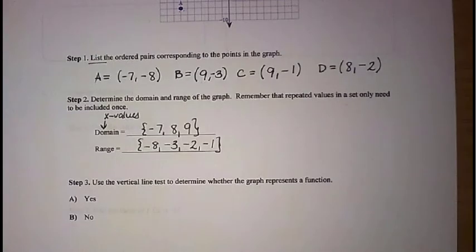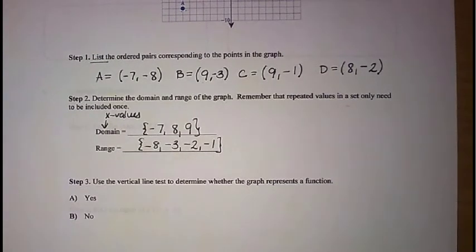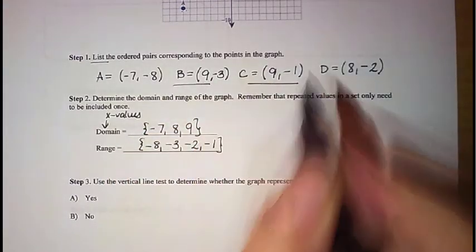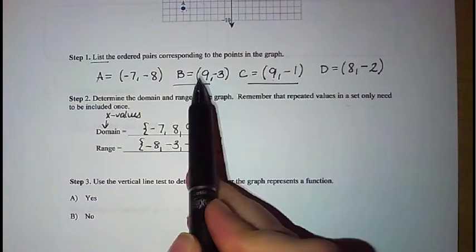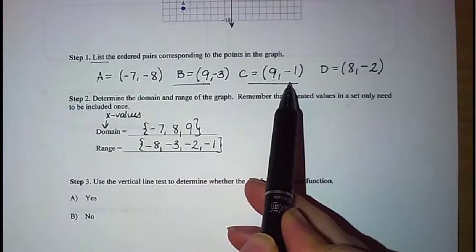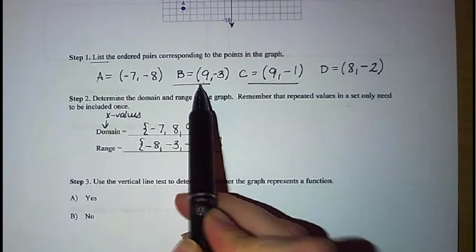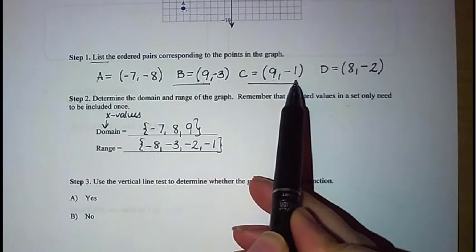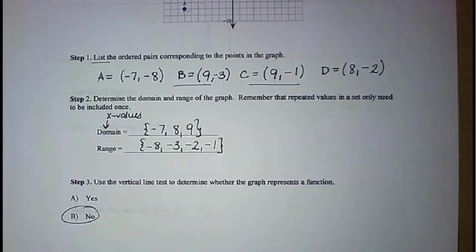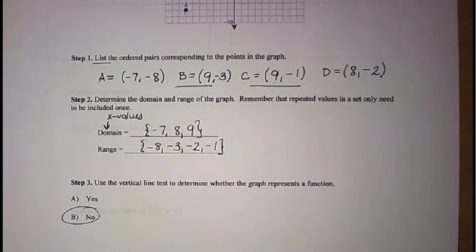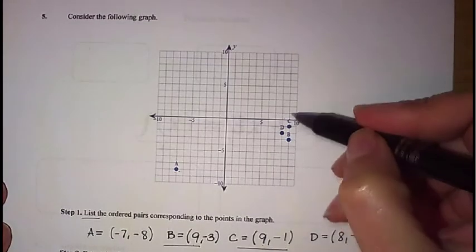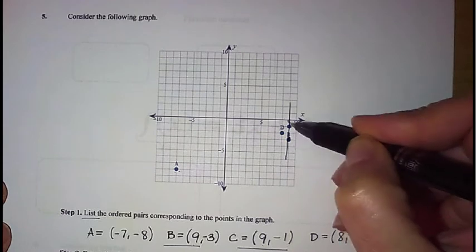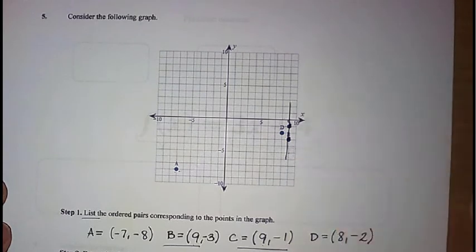Now the third and last question is asking us if this is a function. Well, remember what the function is, that there's only one, for every x, there's only one y. Well, look at B and C. Notice that they have the exact same x value, but they have different y values. That's a problem. We can't have one x value that corresponds to two different numbers. So this particular example is not a function. Again, if you look back up at the original graph, I'm just going to slide this back up here. You'll notice that right along this value 9, you've got two points that line up on that vertical line. And we can't have that. That's not passing our vertical line test that we talked about earlier.